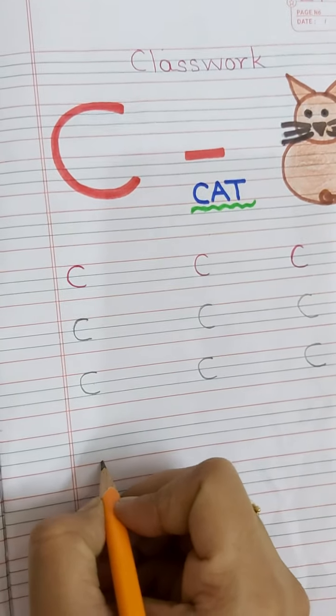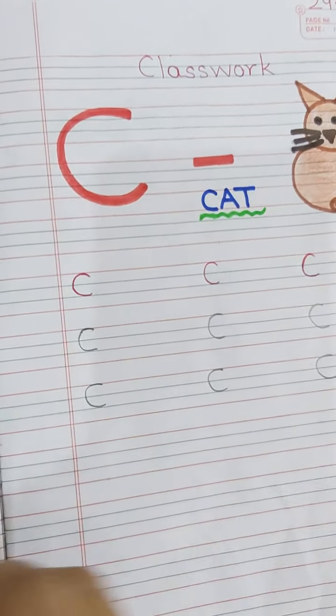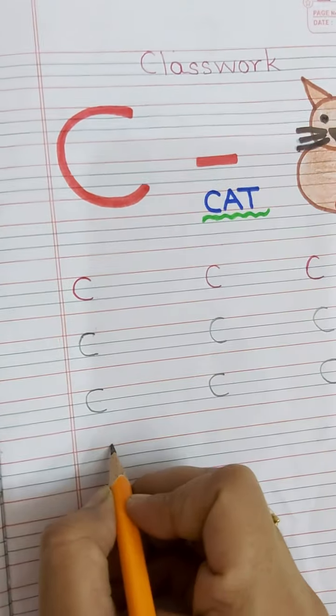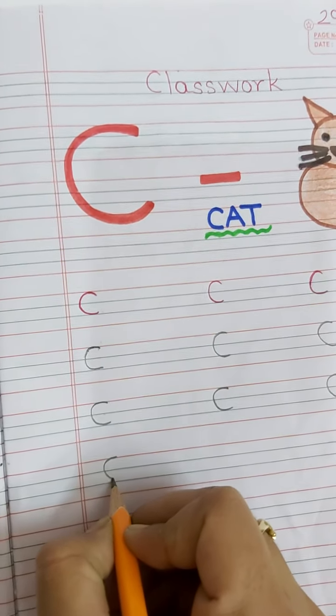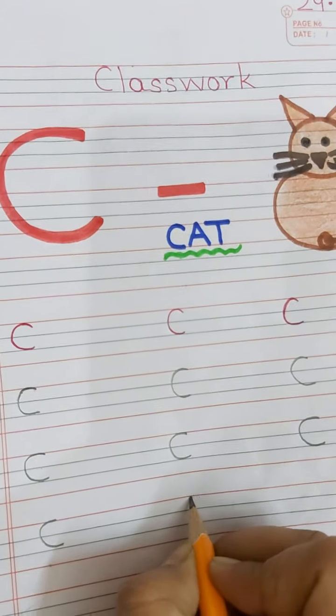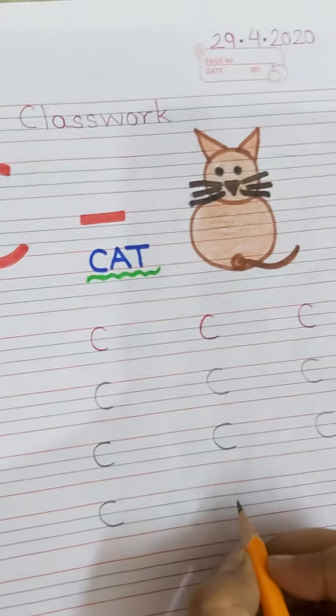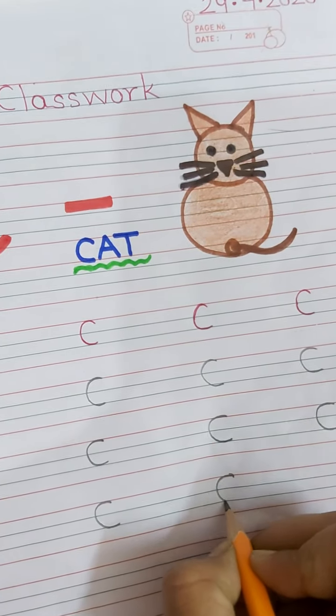And beeta, you don't have to touch red line. Red line ko touch nahi karna hai. Red line se black line tak hi, aapko C ko banana hai. Okay bachou? Everyone understood?